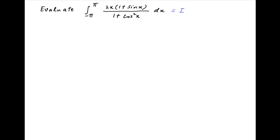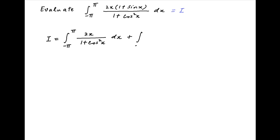Let's denote the given integral by I. Now this integral can be broken into two components. The first component is equal to the integral from minus pi to pi of 2x dx upon 1 plus cos squared x. And the second component is equal to the integral from minus pi to pi of 2x sin x divided by 1 plus cos squared x dx.